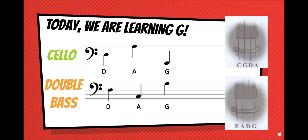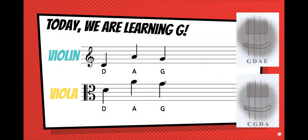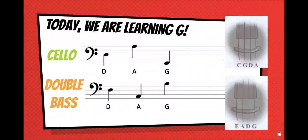If I'm playing the cello, my G sits on the bottom line, and my G string is the second one from the left, just like the viola. For the double bass, if I'm reading a G, it sits in the top space, or the fourth space, and my G string is on the far right.